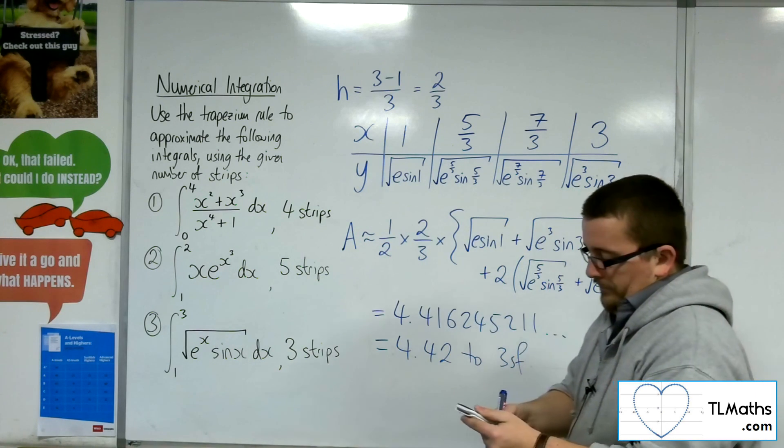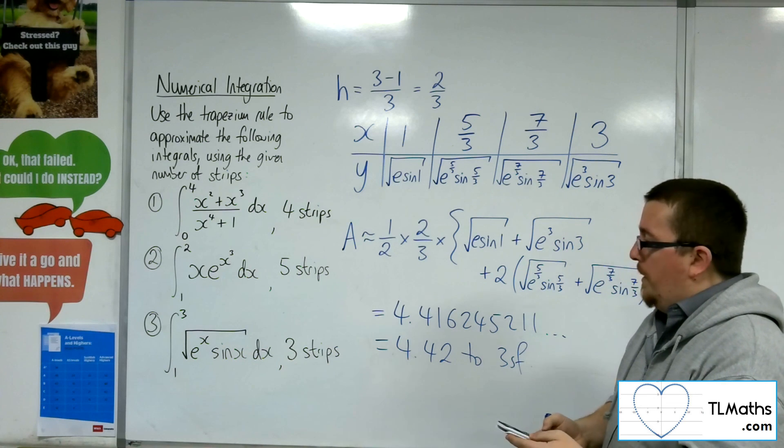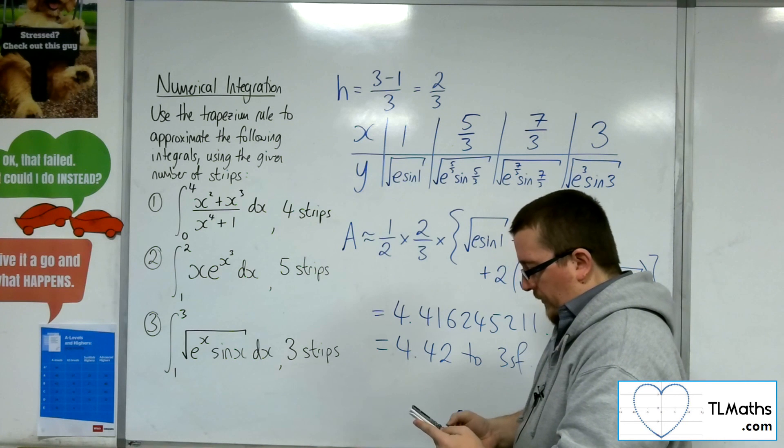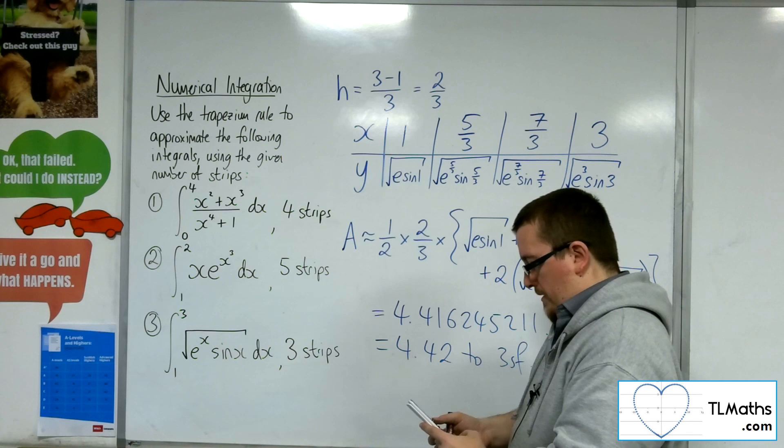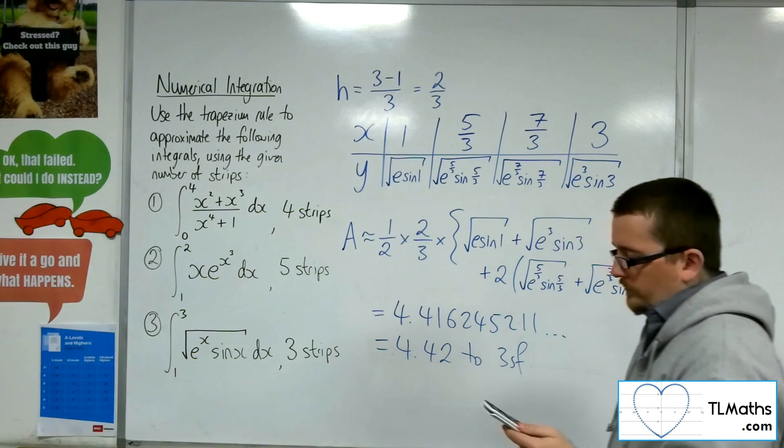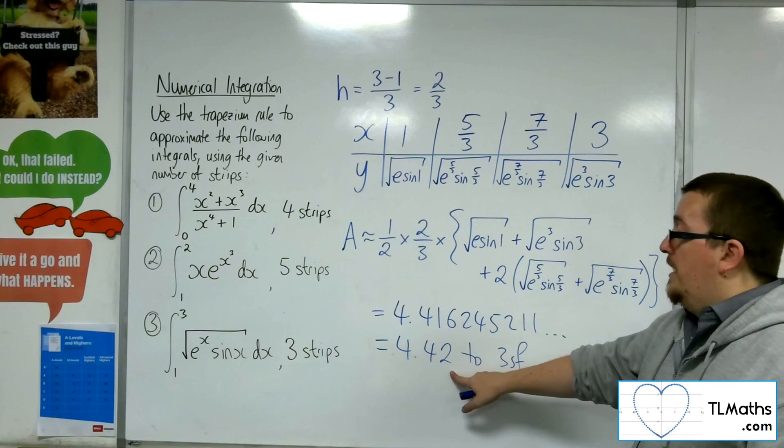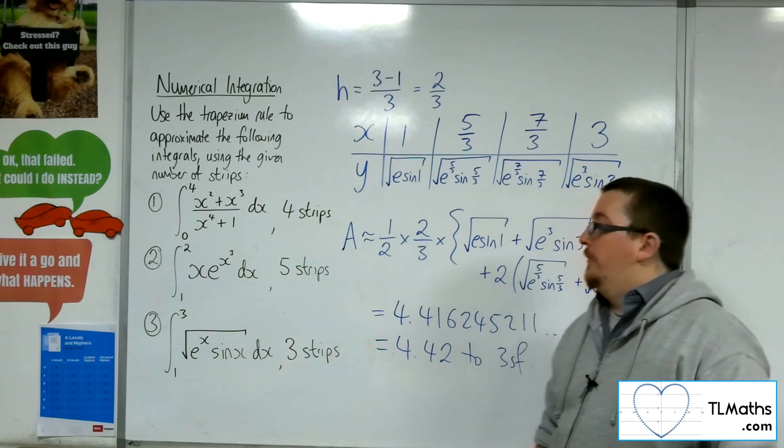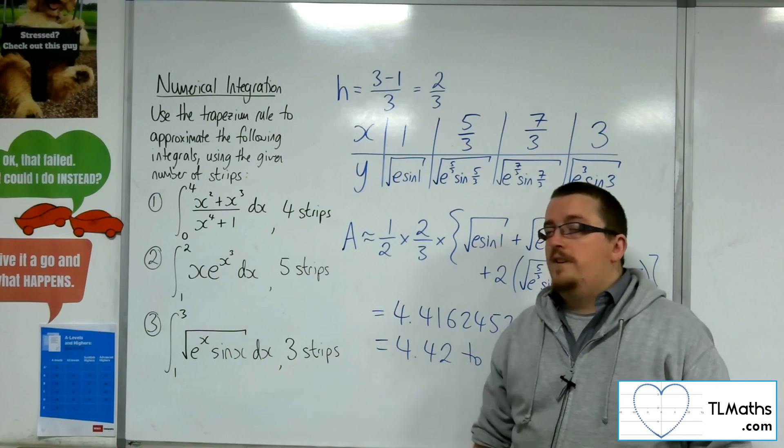So then, let's see how close this is. So using the integral button. Square root of e to the x sin x. Evaluate it between 1 and 3. And we get 4.622, which is actually pretty close to what we've got there. So that is how we can use the trapezium rule with a given number of strips.